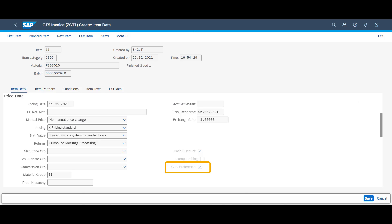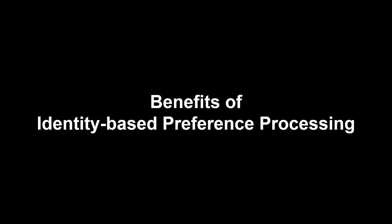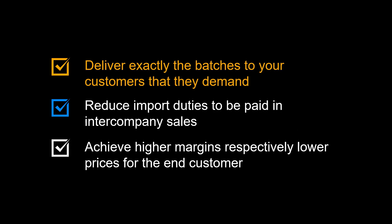Mission accomplished. The functionality shown in this video is available in SAP Global Trade Services with the SAP GTS Identity-Based Preference Processing add-on. The solution works connected to an SAP ERP such as S/4 HANA or SAP ECC. Since you know the preference status per batch, you can deliver exactly the batches your customers demand. In intercompany sales this leads to reduced import duties; in external sales it leads to higher margins or lower prices for the end customer. Thanks a lot for watching. Please comment, like, and subscribe. More videos like this coming shortly.